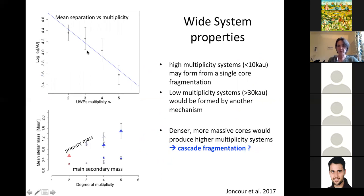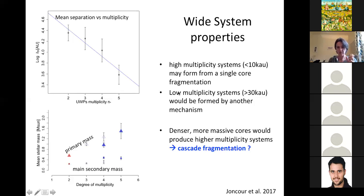This analysis is also supported by the wide multiple system properties in Taurus — systems with separations larger than 1000 AU. The multiplicity decreases with separation: for separations around 1000 to 10,000 AU you have fairly large multiplicity, but for larger separations the multiplicity is lower — only two objects instead of five. The more compact systems are also more massive. We propose this corresponds to a cascade fragmentation, where the densest and most massive cores produce higher-multiplicity systems.